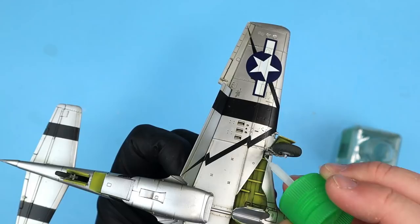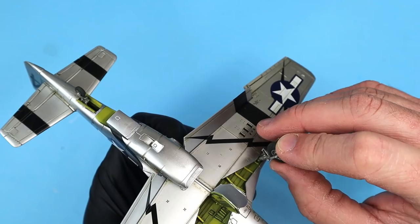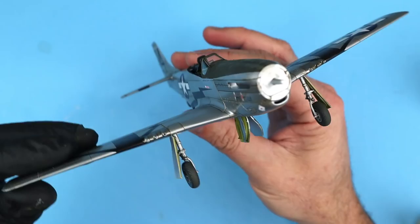The landing gear and wheels were painted and installed. The fit here is not quite perfect so make sure to check alignment of the landing gear and wheels. Also the wheels are handed so be careful to put them on to the correct strut.